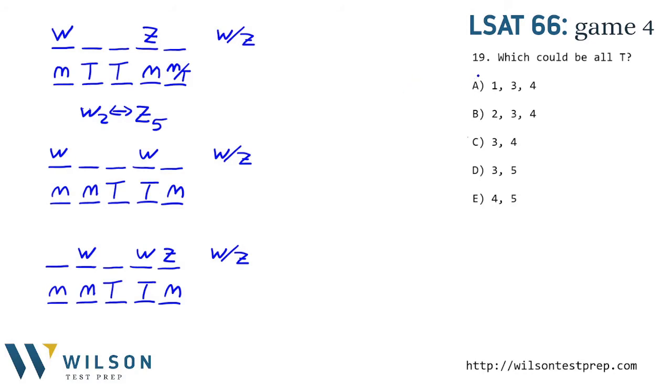Now we're ready for that first question. Which could be all of the traditional pieces? All the traditional pieces could be the second and third, the second, third, and fifth, or the third and fourth. Those are all the possibilities. Third and fourth is one of our choices. We do not see second, third, and fifth, or second and third by themselves. So C is correct.